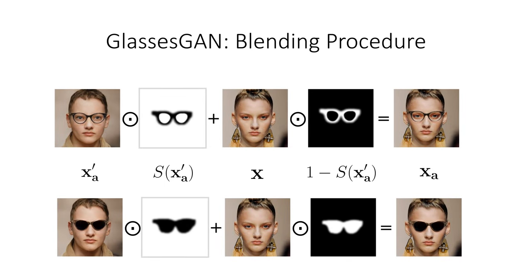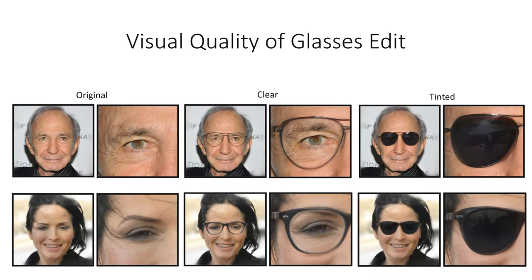Finally, with our edit vectors applied, we utilize our blending algorithm to blend the eyeglasses region of the edited image with the remainder of the original image. As shown here, our method can add glasses to real facial images with very fine detail. Notice the shadowing under the glasses, the preservation of detail in the eyes, the movement of the hair around the glasses to accommodate the frames, and the reflection in the lenses.